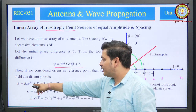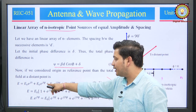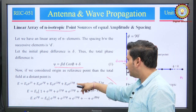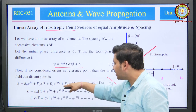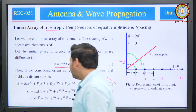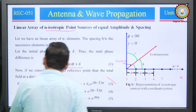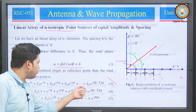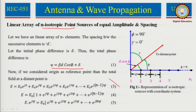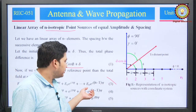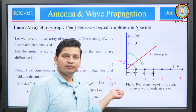So E-naught * e^(j*0) + E-naught * e^(j*2*psi) + e^(j*3*psi) — uniformly the phase is increasing, and that is the linearity here. We then take out E-naught as common. If you visualize, this is nothing but a progressive geometric series where phase and amplitude vary according to this equation.